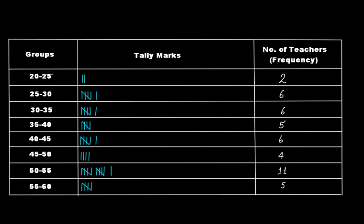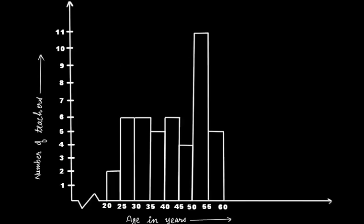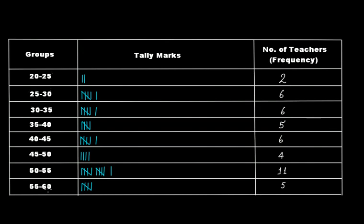The difference between the upper limit and the lower limit here is 5. Here also, 30 minus 25 is 5. 35 minus 30 is 5, and that is what you can see here: 20 to 25, 25 to 30, 30 to 35, 35 to 40, and up to 60 because we have our ages up to 60.